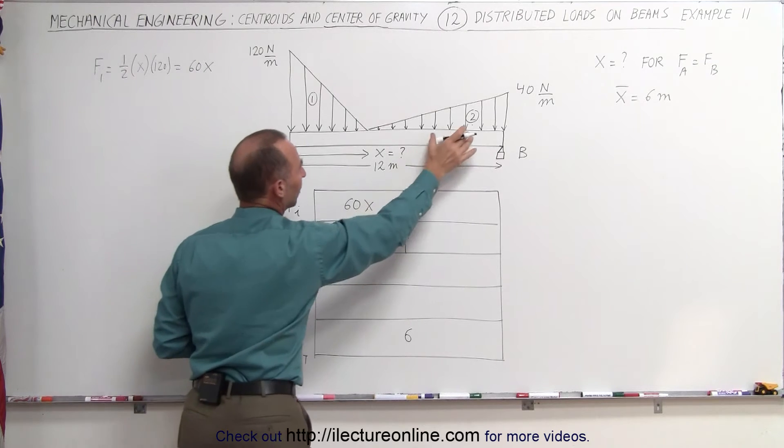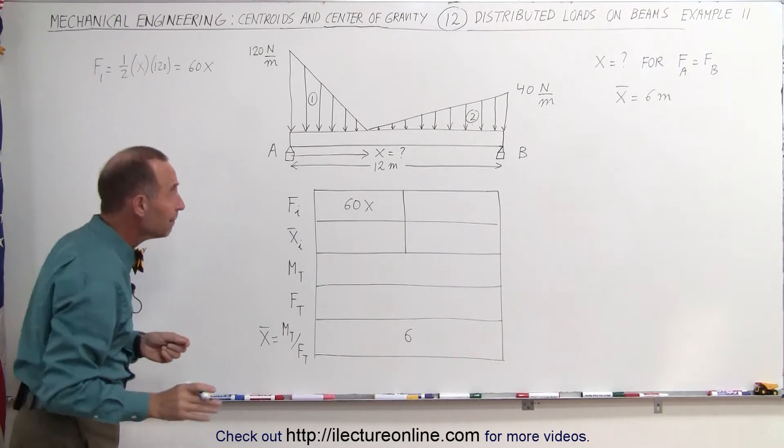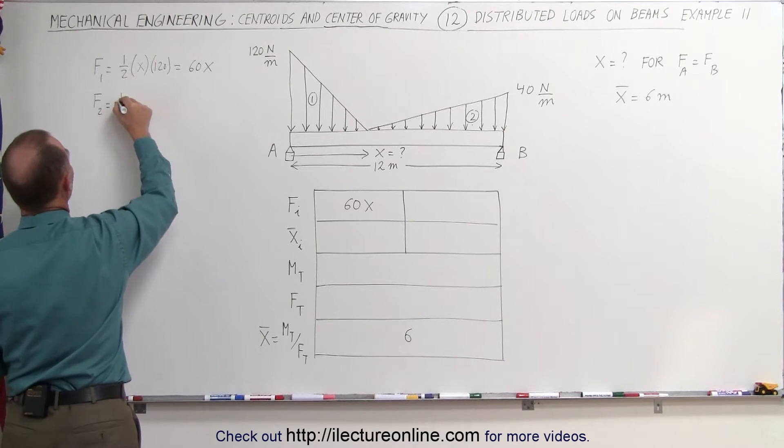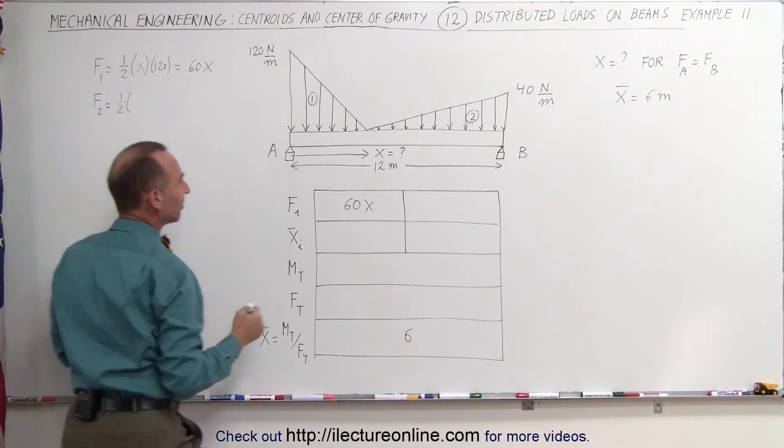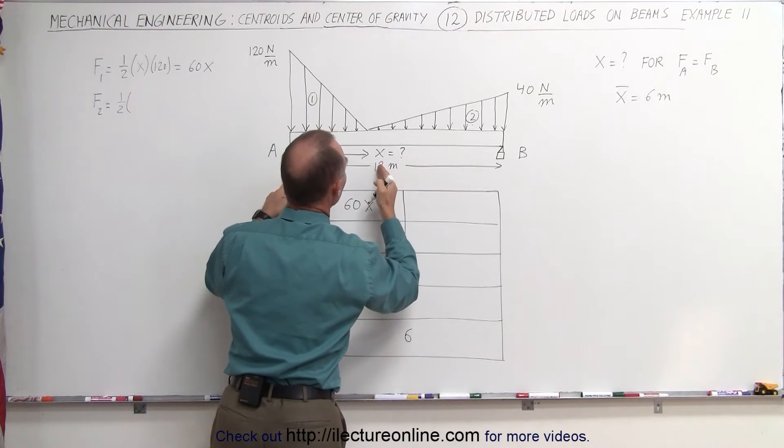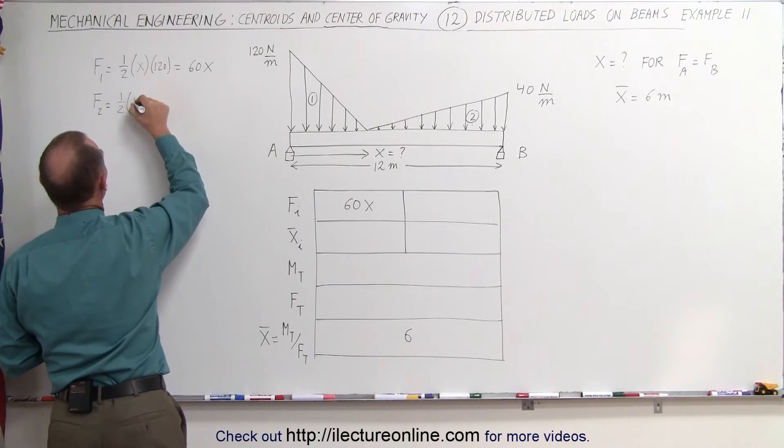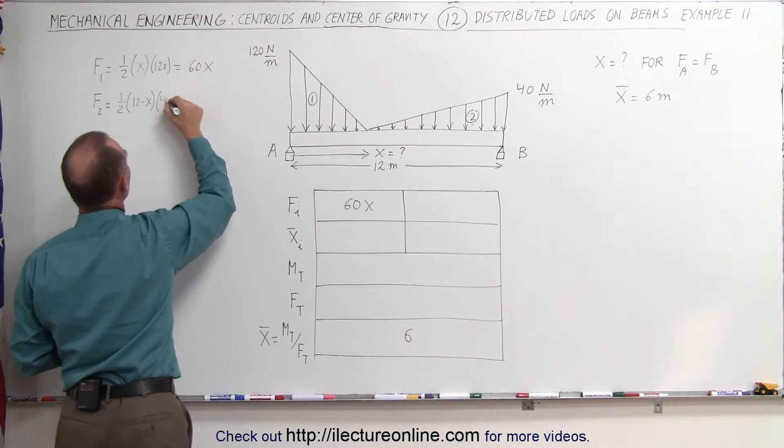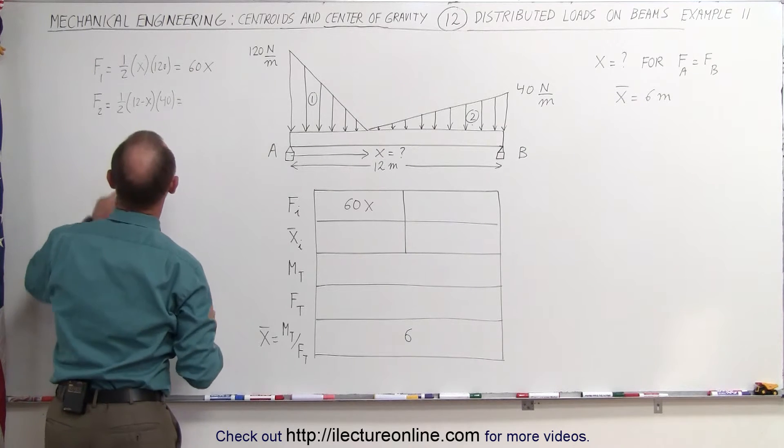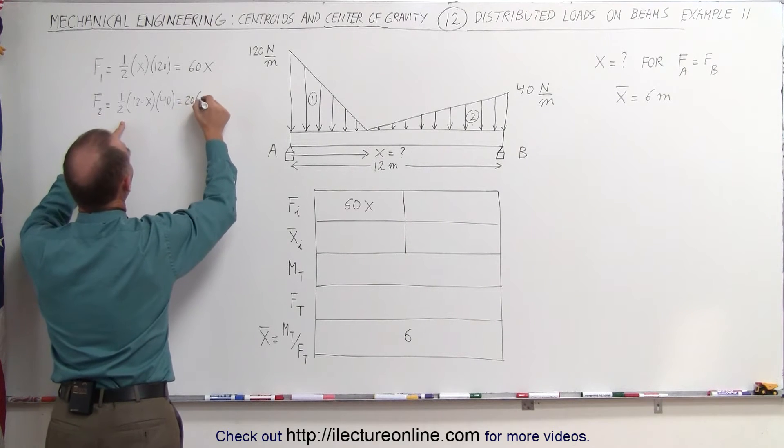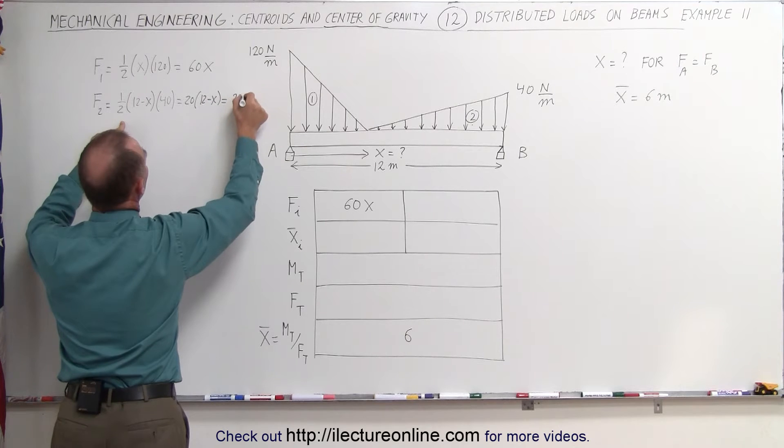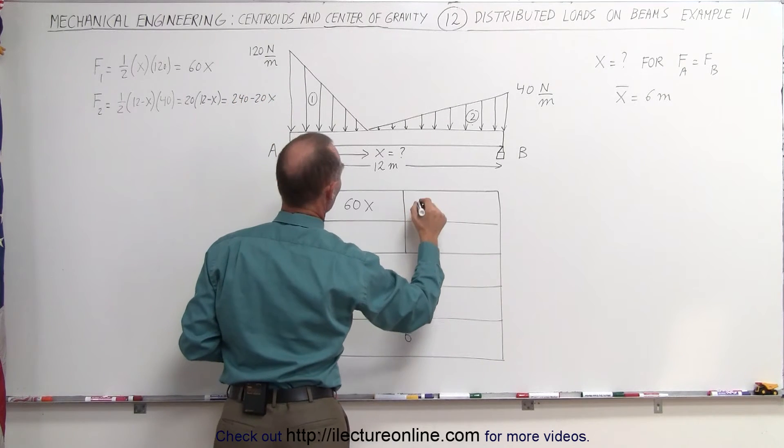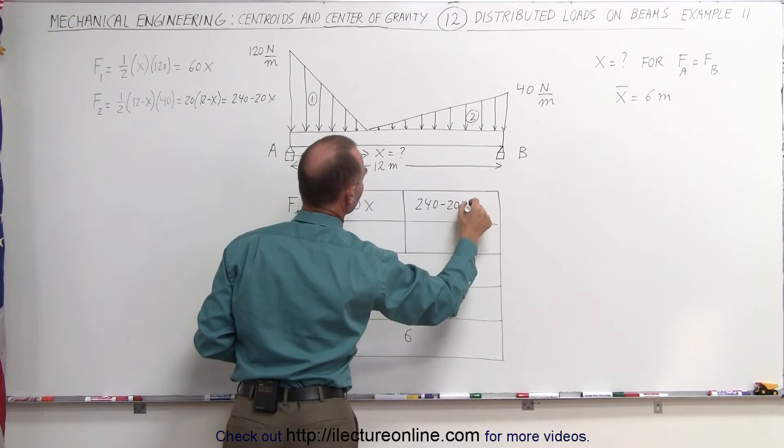The force caused by the second load segment over here, we'll do the exact same way. F sub two is equal to, since it's a triangular section, one-half times the base. In this case, the base would be 12 meters minus x. So that's 12 minus x times the height, it's 40. So this is equal to 20 times 12 minus x, which is equal to 240 minus 20x, and that goes in here. 240 minus 20x.